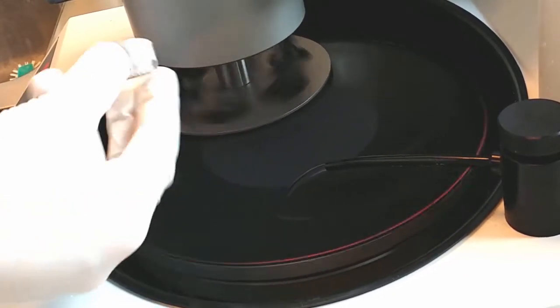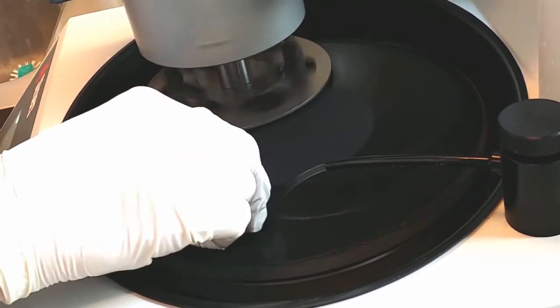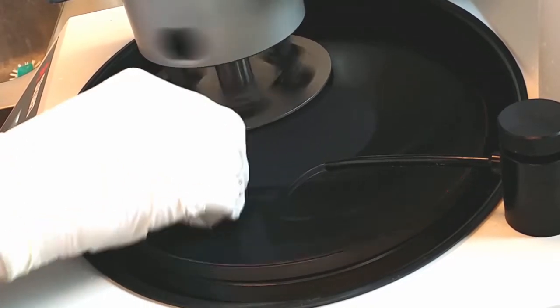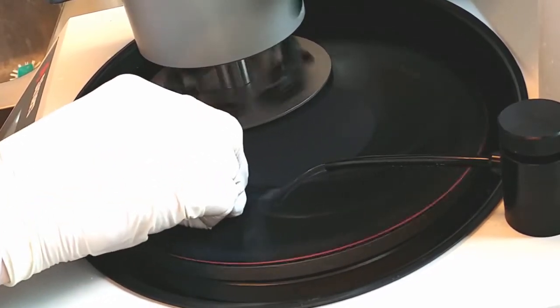We start by grinding off the backside of the sample to make it flat and even. This is used in later stages when we're going to mount it on the SEM sample holder.